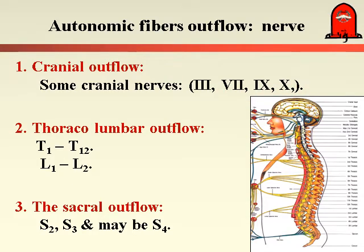The cranial nerves carrying autonomic nerve fibers are the oculomotor, the facial, the glossopharyngeal, and the vagus nerve, while the rest of the cranial nerves do not have Autonomic Nerve Fibers. The second group is the Thoracolumbar Outflow — from its name, it goes out from the thoracic and lumbar segments. It includes all thoracic segments from T1 to T12, and the upper two lumbar segments, L1 and L2.